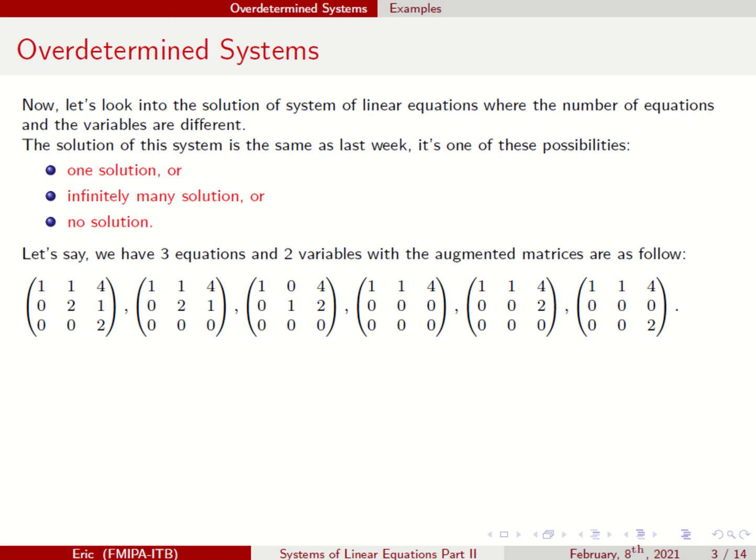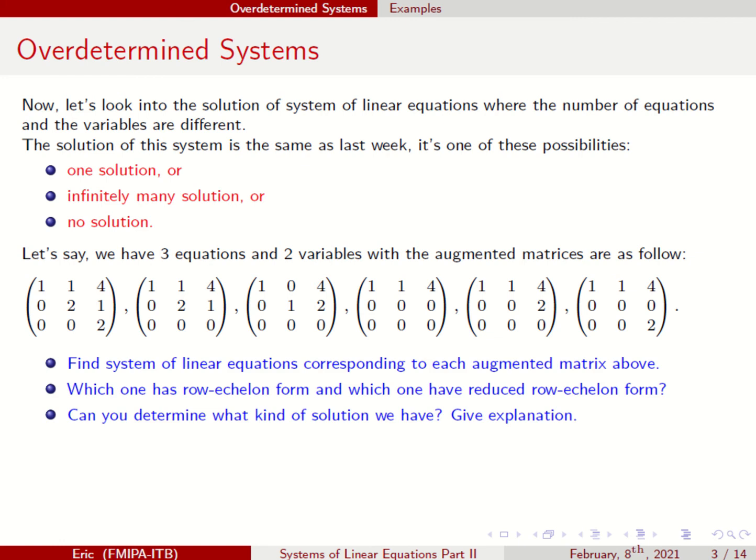What about this one? You have X plus Y equals 4, and no other equation. How many solutions do you have? Infinitely many solutions. Now try to write down the system of linear equations corresponding to each of the augmented matrices above and find out whether they have one solution, infinitely many solutions, or no solution at all.